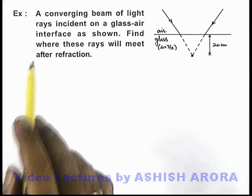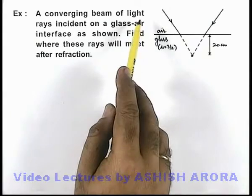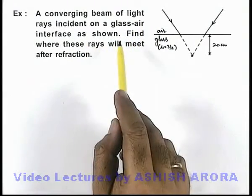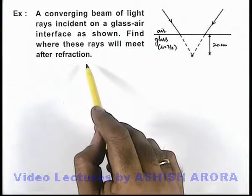In this example, we are given that a converging beam of light rays incident on a glass-air interface as shown, and we are required to find where these rays will meet after refraction.